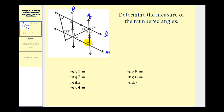Taking a look at angle three and the angle that measures one hundred seven degrees, these two are corresponding angles to line L and line M, and therefore they're congruent. So the measure of angle three would be one hundred seven degrees.